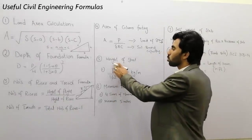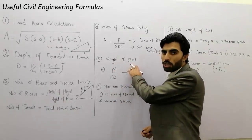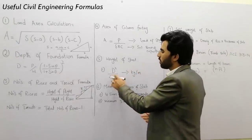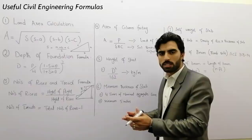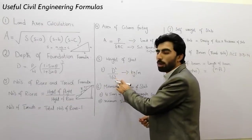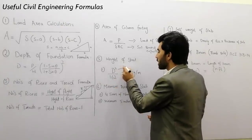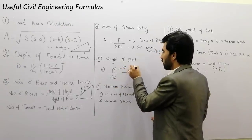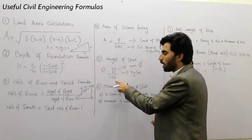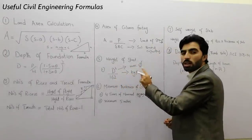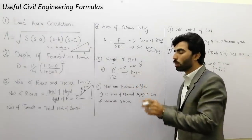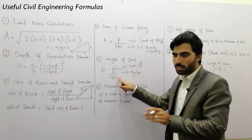The fifth formula is weight of steel — how to find the weight of steel. The formula is D squared divided by 162, where D is the diameter of the steel bar in millimeters. This formula gives us the weight of steel in kg per meter.